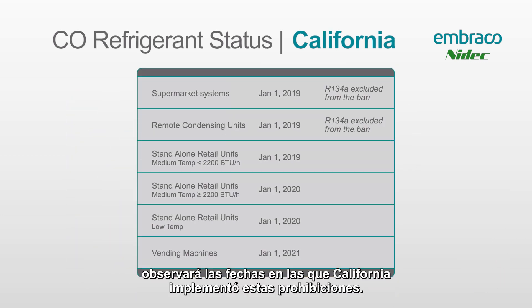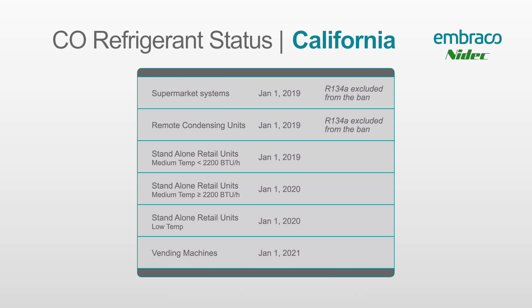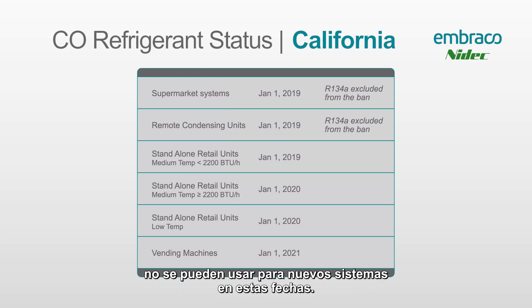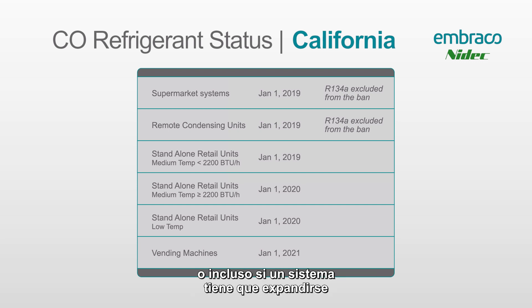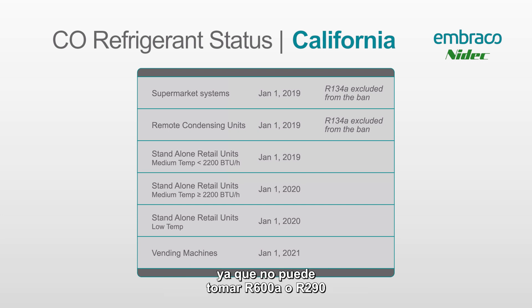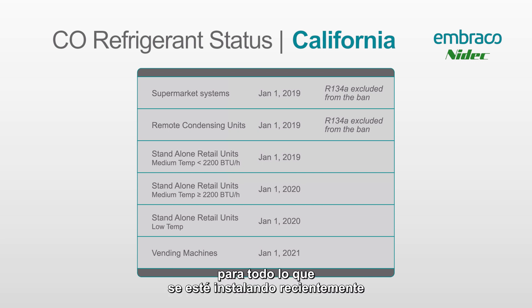If you look at the chart, it'll show the dates of when California implemented these bans. They first started with the top three categories, such as supermarket systems, on January 1st of 2019, and the final ban will be vending machines on January 1st of 2021. What this means is all these gases cannot be used for new systems by these dates. A new system means that if a system is brand new or even if a system has to be expanded and the refrigerant charge is changed, they can no longer use any of these banned gases. This largely means new equipment, since you can't take R600A or R290 and retrofit it into old equipment.